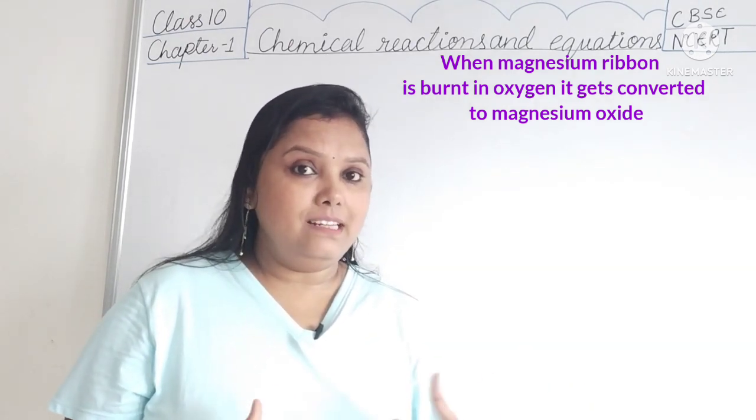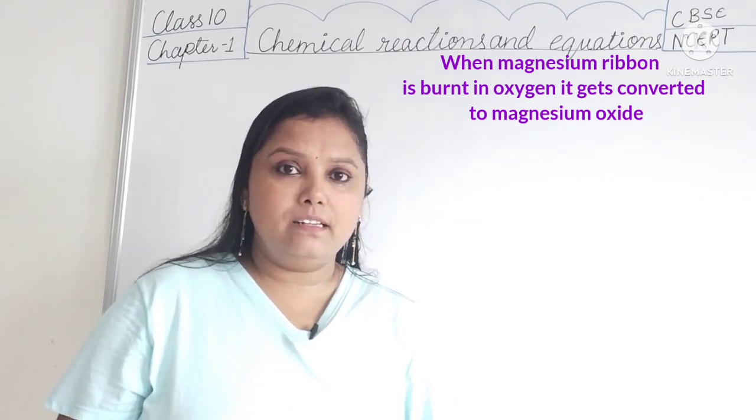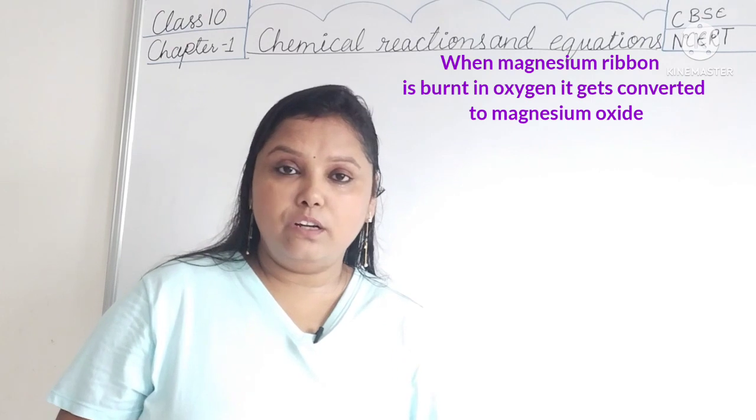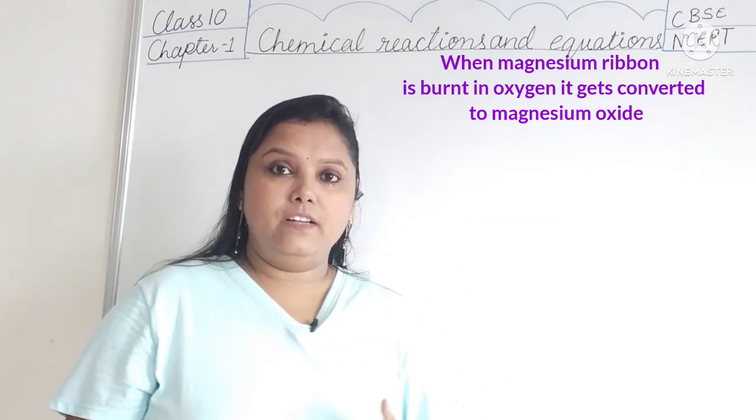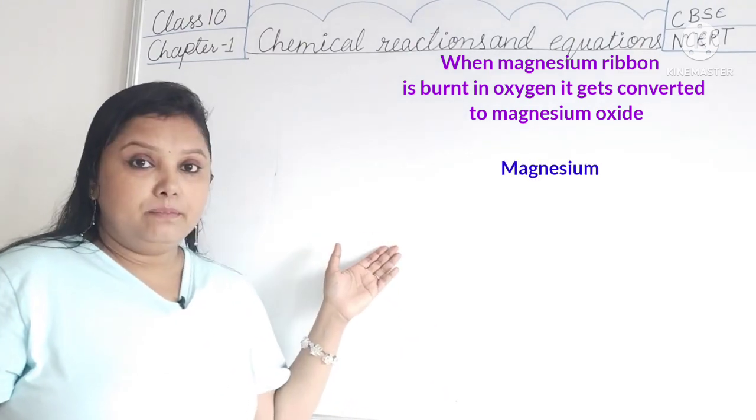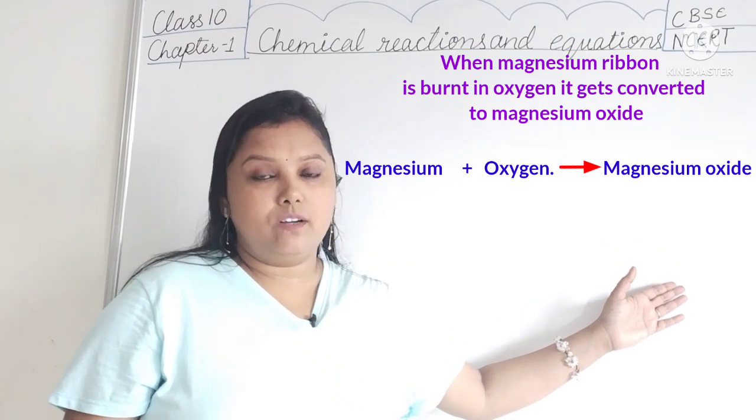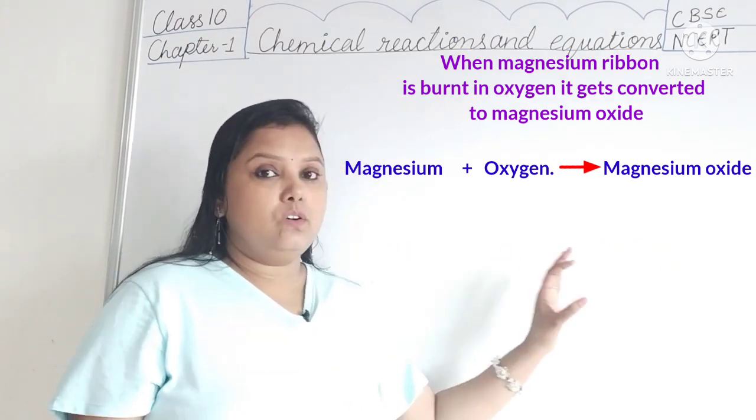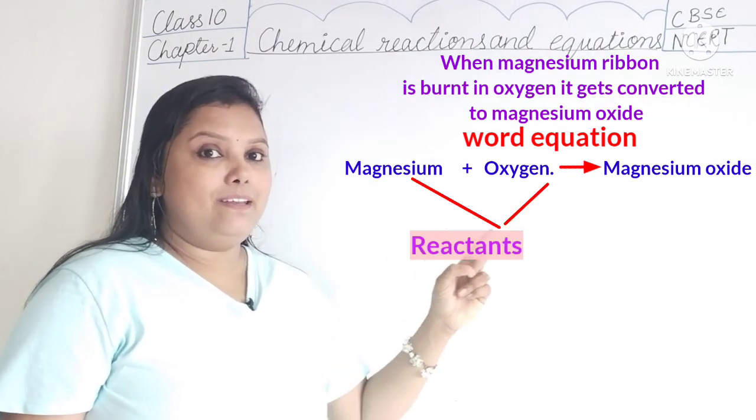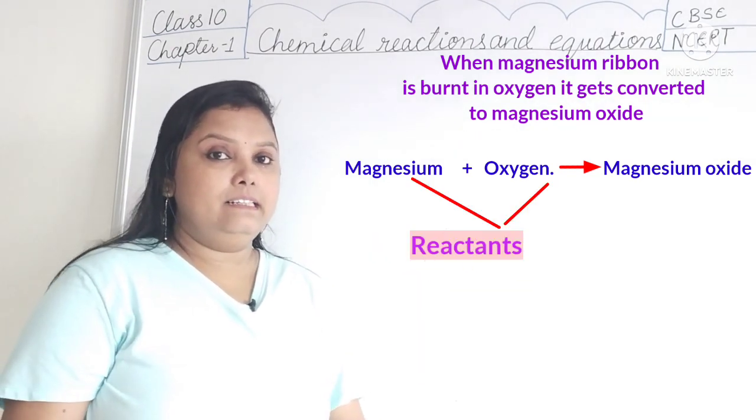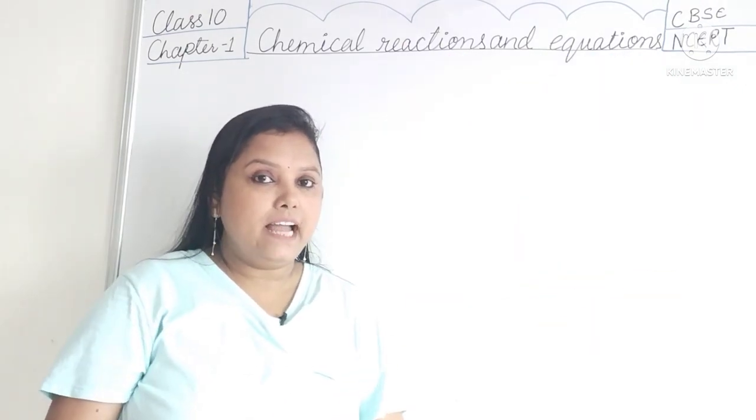But when we will write it in sentence, it will be quite long. So is there any shorter method? Yes, there is a shorter method or shorter form of this chemical reaction. Magnesium plus oxygen gives magnesium oxide. So this is called a word equation. Here magnesium and oxygen are the reactants and the new substance that is formed is the product.